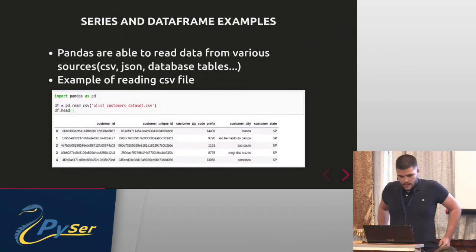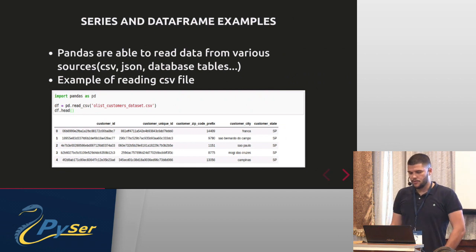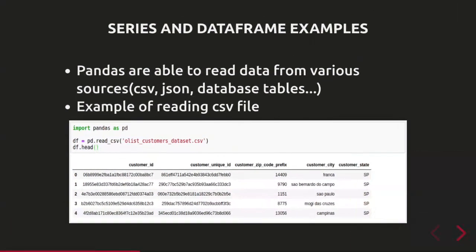Pandas is able to read data from various sources like CSV files, JSON files, and database tables. This is a simple example of how to read a CSV file. The `head` function shows us a preview of the first few rows of the DataFrame, and it's quite similar to a table in a relational database.